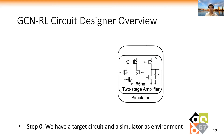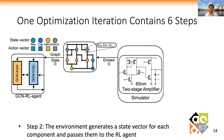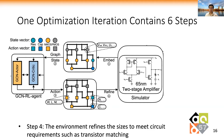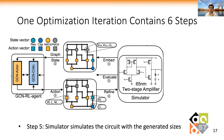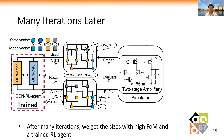In the GCNRL framework, we firstly have a target circuit and a simulator as the environment. One optimization iteration contains six steps. In step 1, the environment embeds the circuit topology into a graph, whose nodes are circuit components and edges are wires. In step 2, the environment generates a state vector for each component and sends the graph with state vectors to the reinforcement learning agent. In step 3, the RL agent processes the graph and state vectors and generates the sizes for each node. The environment then refines the sizes to meet circuit design requirements, such as transistor matching. In step 5, the simulator simulates the circuit with the generated sizes. In the last step, a reward value is calculated and fed back to the RL agent to update its policy. After many iterations, we get sizes with a high figure-of-merit value and also a trained RL agent.